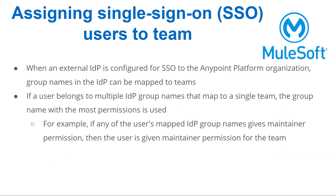If users belong to multiple groups in IDP and those are mapped to a single team, then the most permissive permissions will be used for that team. For example, if any of the users mapped in IDP group names has a maintainer permission, then the user is given a maintainer permission for the team as well. That's a little overview of Teams. Let's jump onto the demo part.